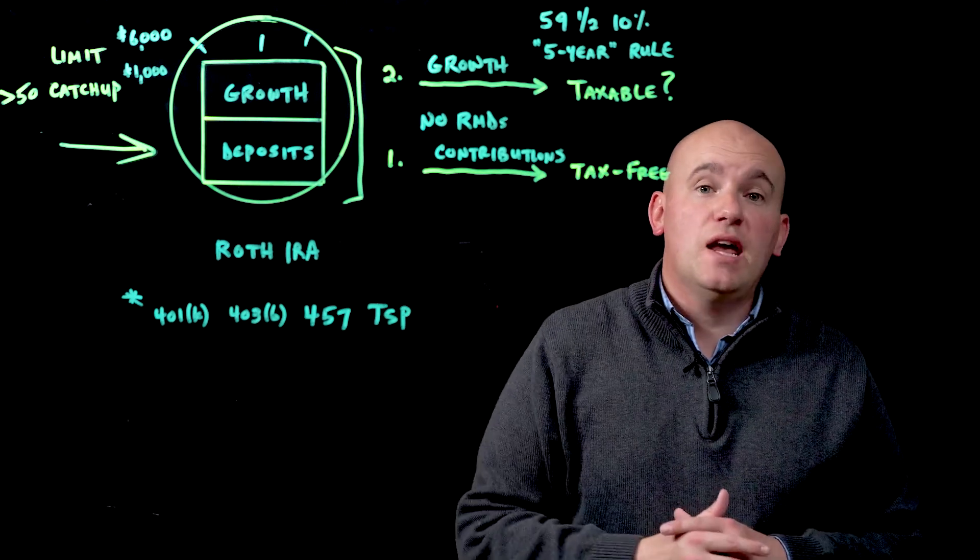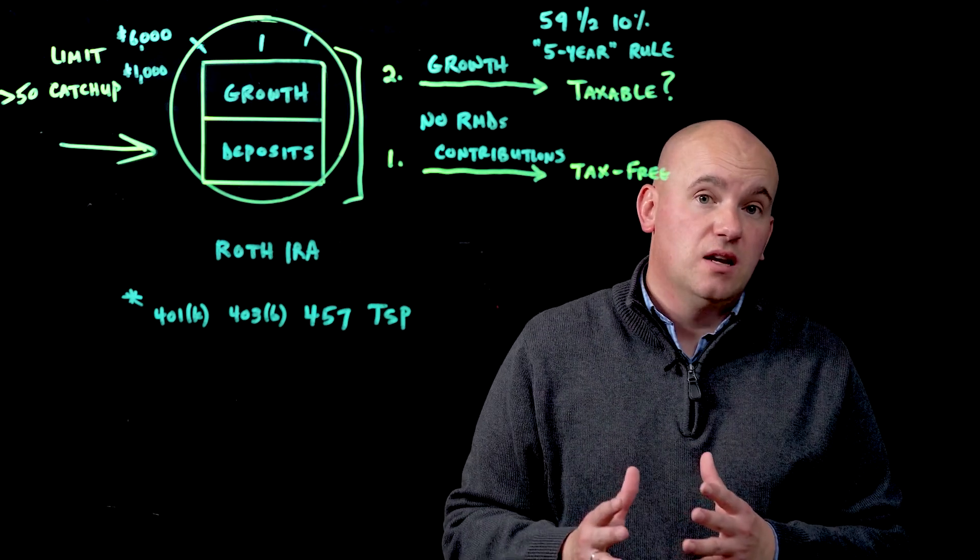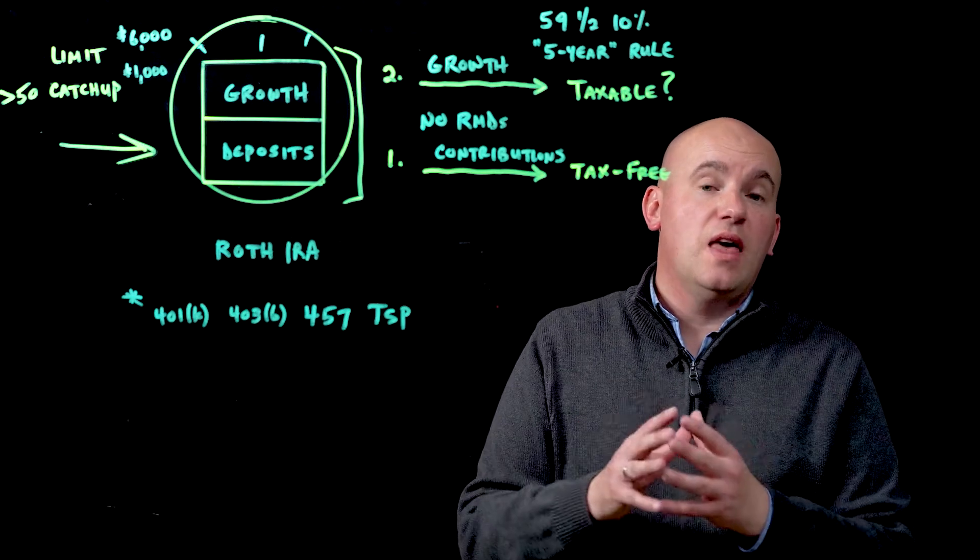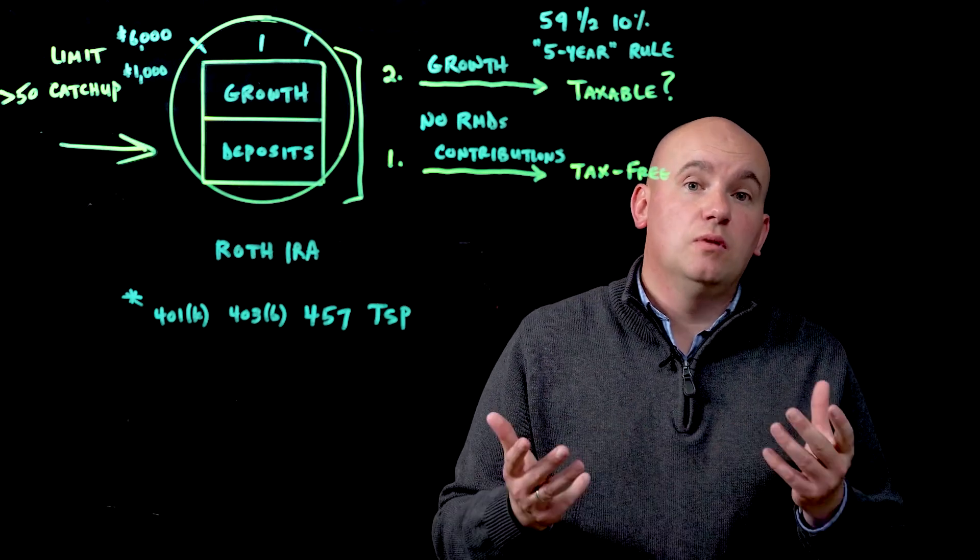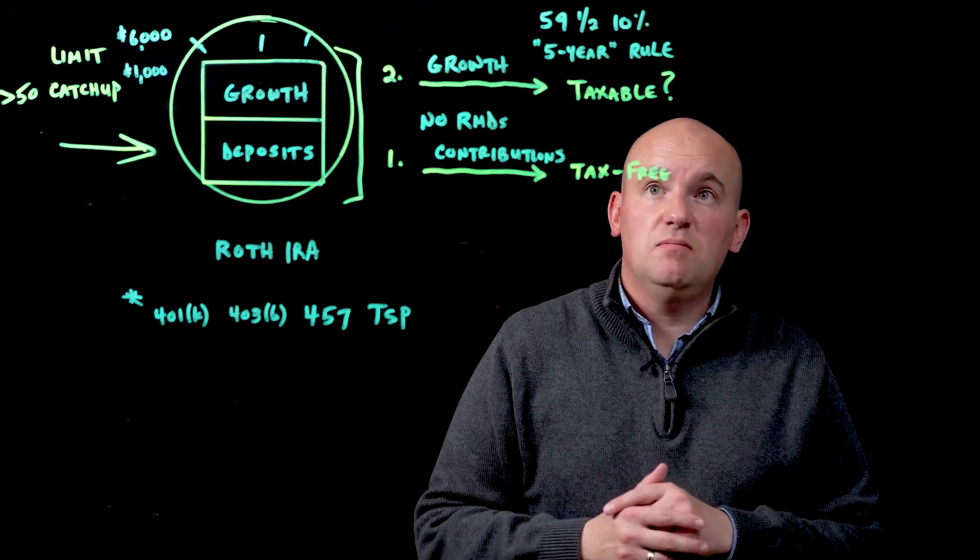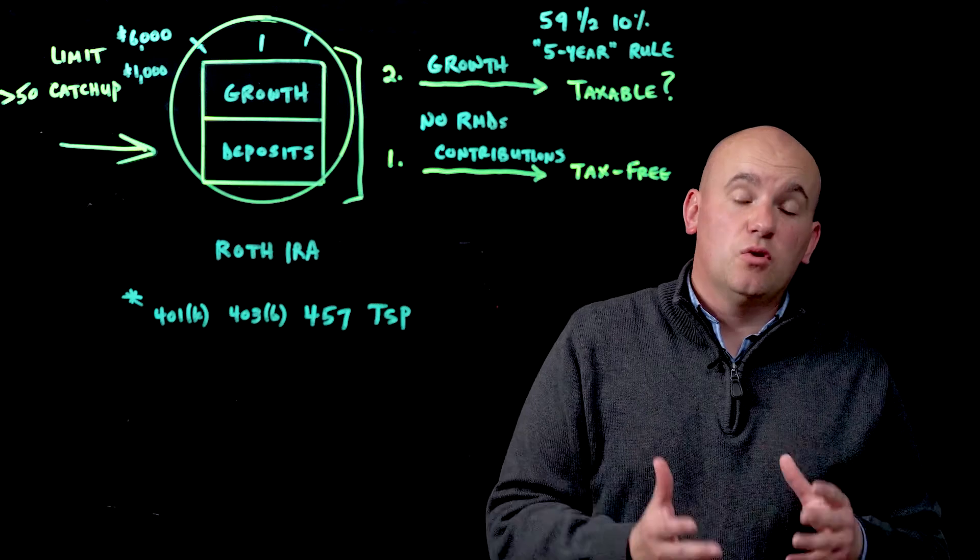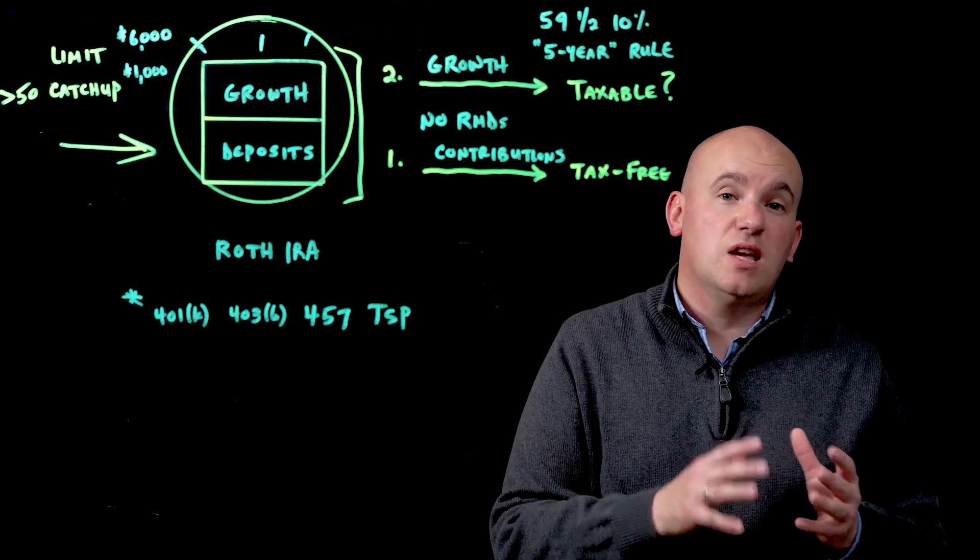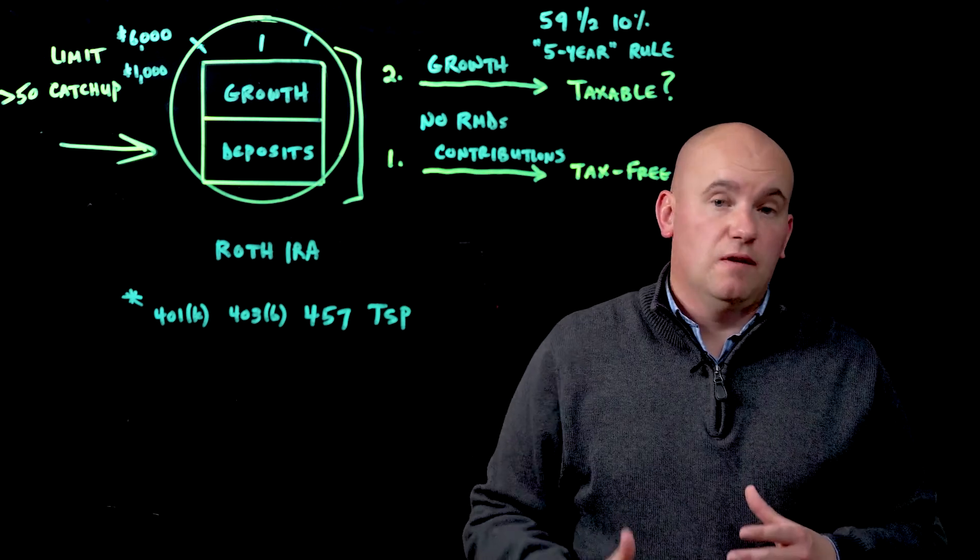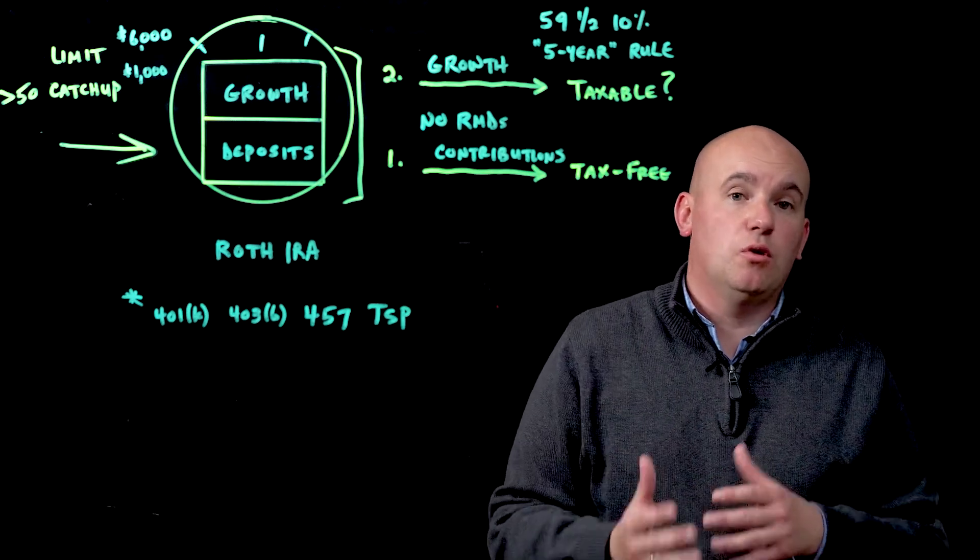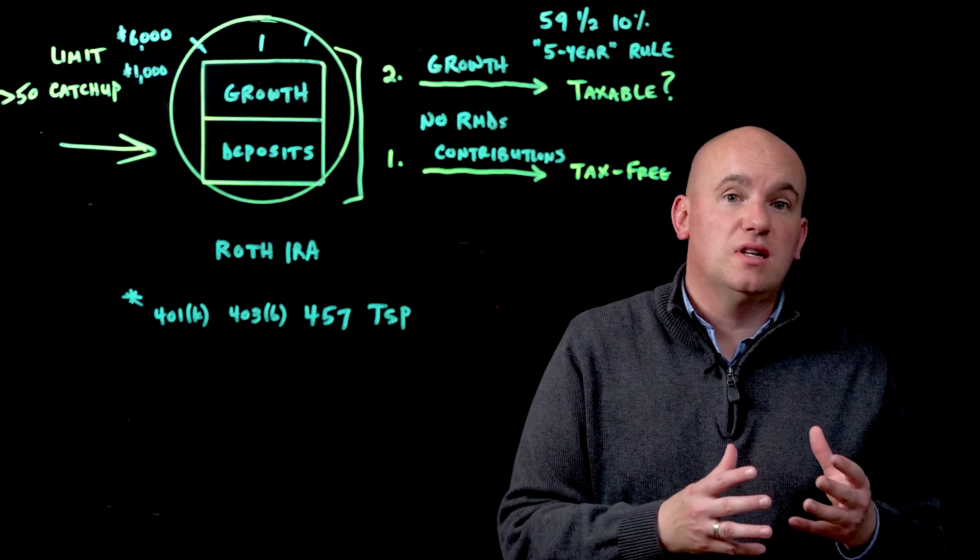It depends on your age. Are you 59 and a half or older? If you're not quite there yet, there is going to be a penalty on that growth distribution. It will have that 10% penalty. If the account hasn't been open for five years, that's another rule or standard that you have to meet. But if you have met the five-year rule, you're over 59 and a half, you can now take all that distribution tax-free.